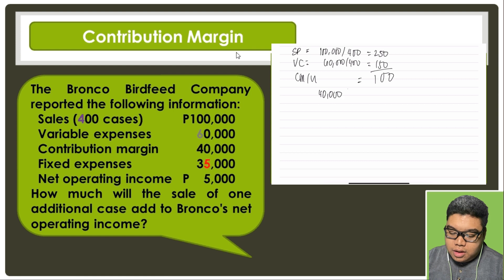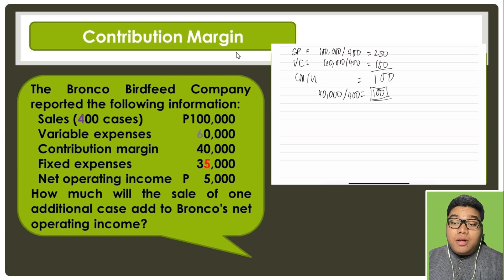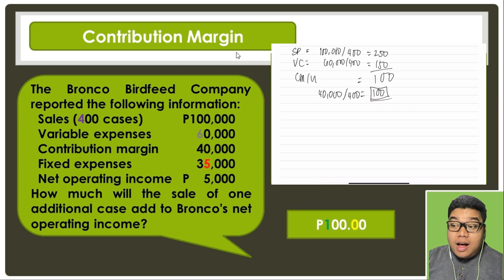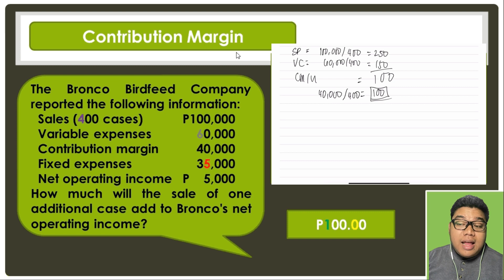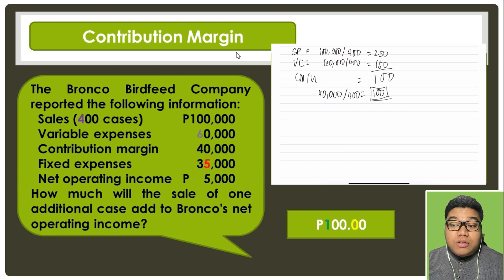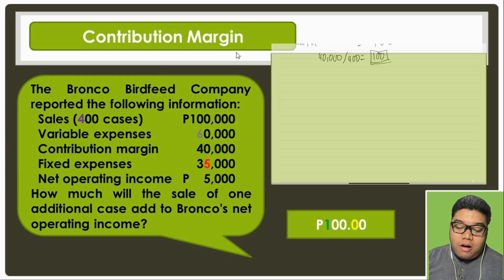Alternatively, we can compute CM per unit as 40,000 ÷ 400 = 100, confirming the result. If there is one additional unit sold, it would add 100 pesos to net operating income, because fixed expenses of 35,000 are already fully covered by the current total contribution margin of 40,000. Each additional unit sold contributes an additional 100 pesos to net operating income.